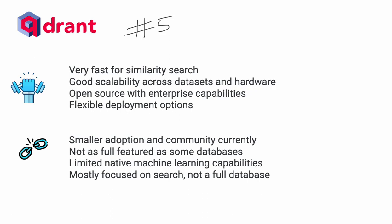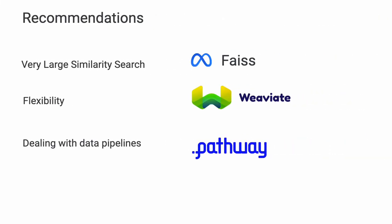Looking at the summary slide, here are my recommendations out of these top five vector databases. If you have a large similarity search requirement with billions of records at the scale of Facebook — or even half that scale — and you're a large company wanting to do similarity search, go for FAISS. It's purpose-built for that and it's amazing.